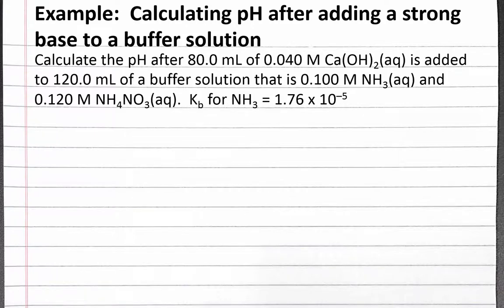In this example, we calculate the pH after adding a strong base solution to a buffer solution. Our problem reads: calculate the pH after 80 milliliters of 0.40 molar aqueous calcium hydroxide solution is added to 120 milliliters of a buffer solution that is 0.100 molar aqueous ammonia and 0.120 molar aqueous ammonium nitrate. Kb for ammonia is 1.76 times 10 to the negative fifth.